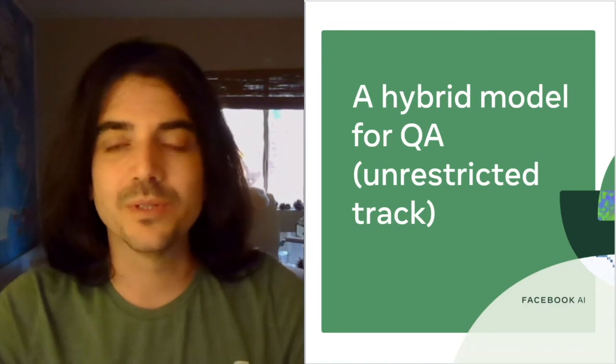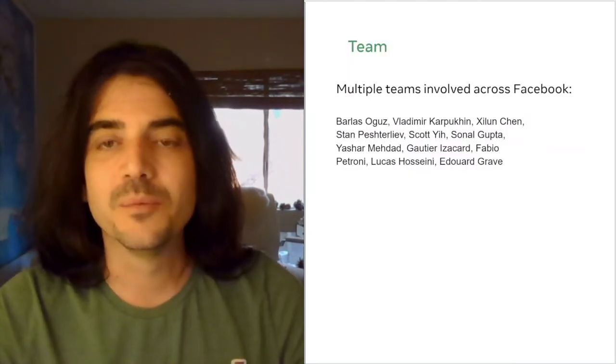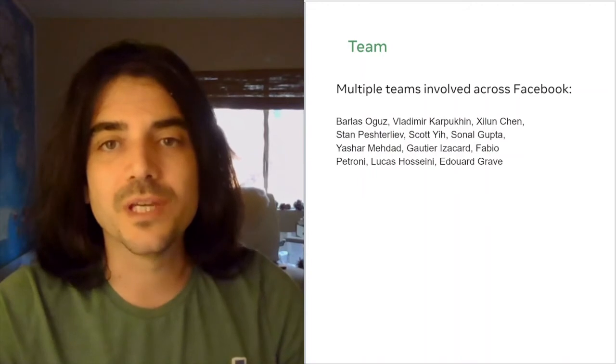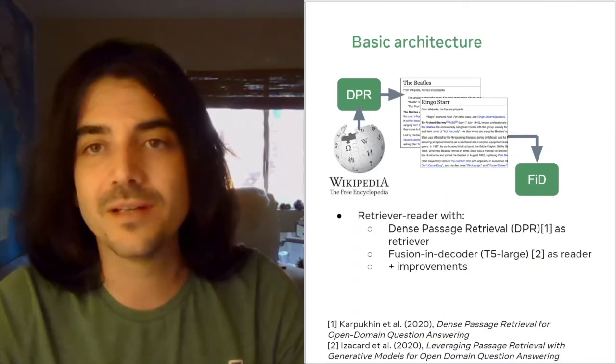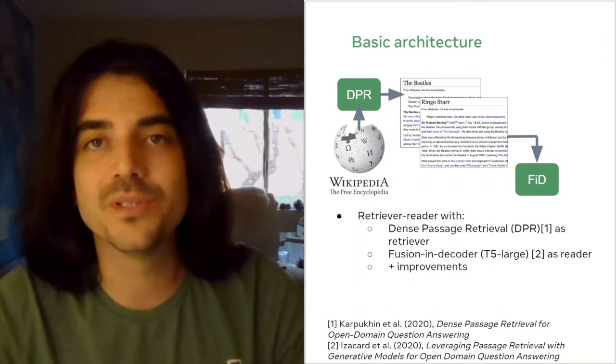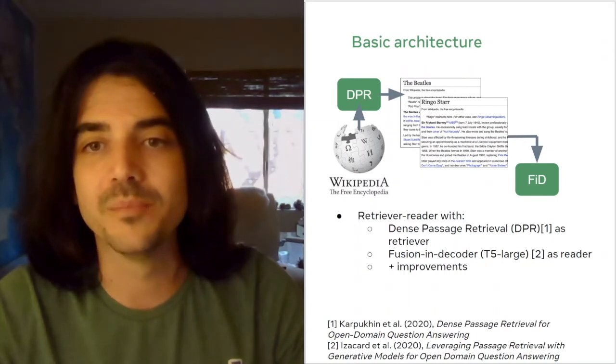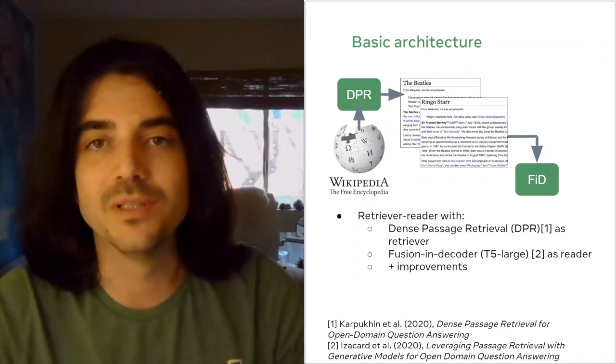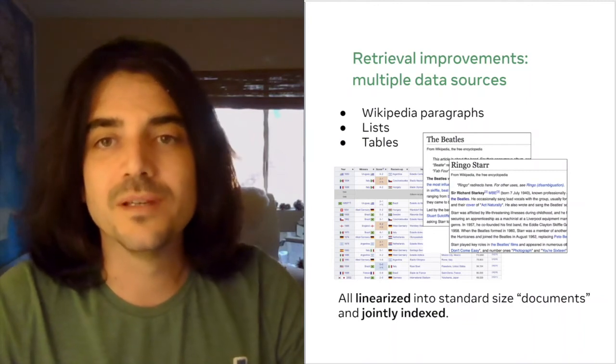Hi, I'm Barlas Oguz. I'm a research scientist at Facebook AI. I'll be presenting our hybrid model submission for the unrestricted track. Multiple teams were involved across Facebook for this project with a long list of contributors you can see on this slide. We pick a retriever reader architecture as our basic architecture for this work. For the retriever, we are using dense passage retrieval. And the reader model is based on the fusion in decoder paper that's based on the T5 large model.